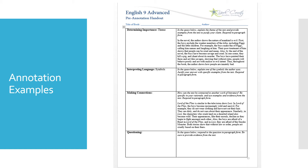Here's an example of a making connections paragraph. 'The Lord of the Flies is similar to the television show Lost. In Lord of the Flies, the boys become increasingly wild and uncivil. For example, they do not wear clothing and have not cut their hair — they are dirty and do not care about their appearance. Similarly, in Lost, characters who crash-land on a deserted island also become wild; their appearance, like their morals, declines as they begin to fight amongst each other. Also, the boys are afraid of a beast in Lord of the Flies, and in Lost they are afraid of the smoke monster. Both stories show that without law or order, people act cruelly based on their fears.' Make sure you explain what you are connecting and how it helps to show the theme.